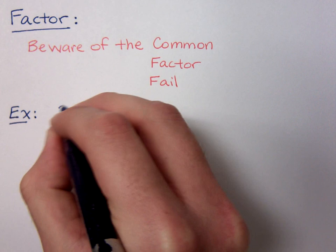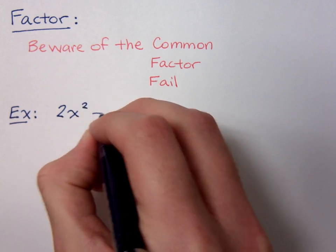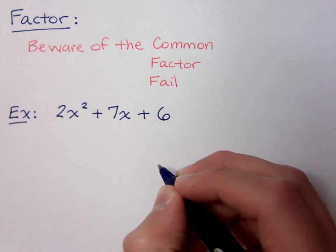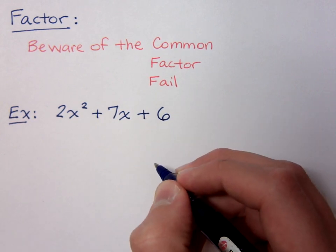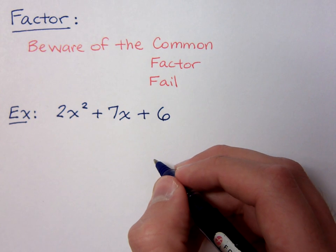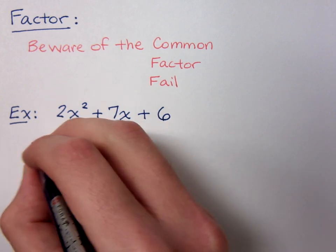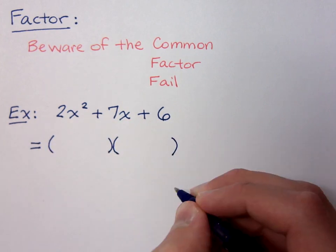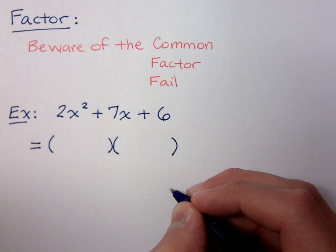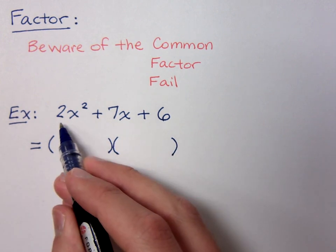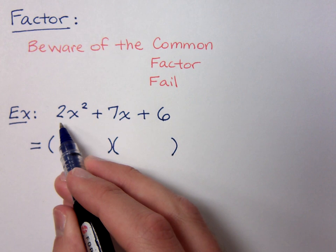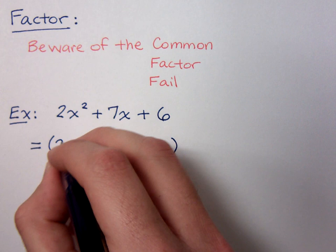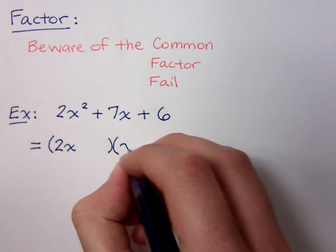So let's look at this example: 2x squared plus 7x plus 6. There's the AC method for factoring this, but I want us to look at how we can factor using trial and error, and be more efficient in the way that we do our guessing and checking. When we look at 2x squared, we understand that this is prime, so there's only one way it can factor — it must break down as 2x and x.